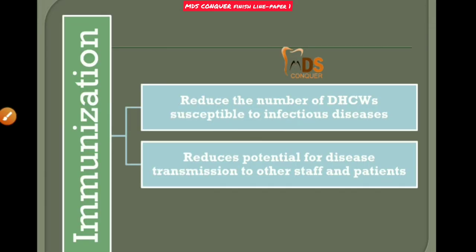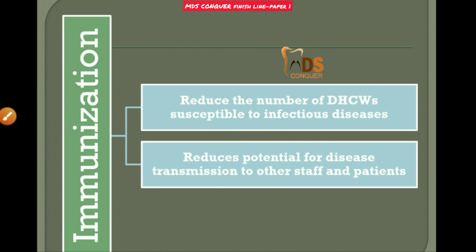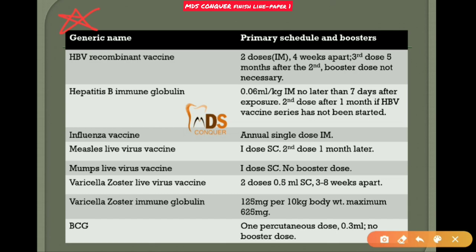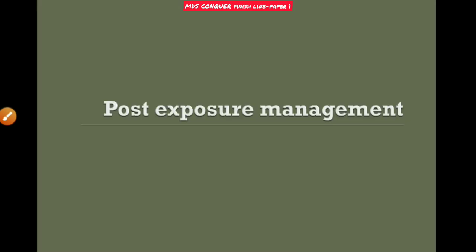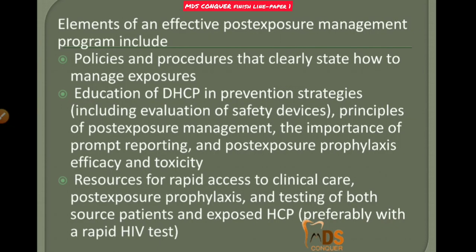Immunization reduces the number of susceptible healthcare workers to infectious diseases. This important table for the exam lists vaccines: Hepatitis B HBV recombinant vaccine, influenza vaccine, measles live virus vaccine, mumps live virus vaccine, varicella virus vaccine, and BCG vaccine — with primary schedules and booster doses.